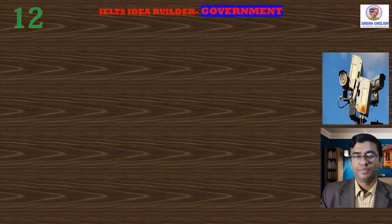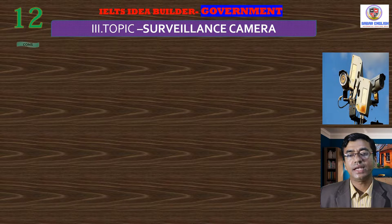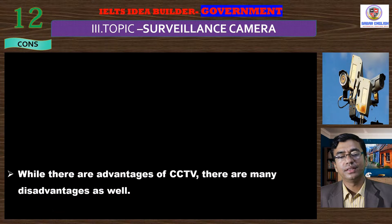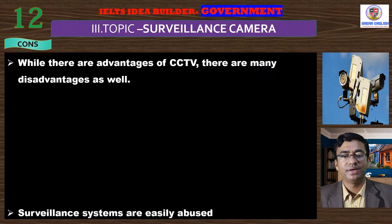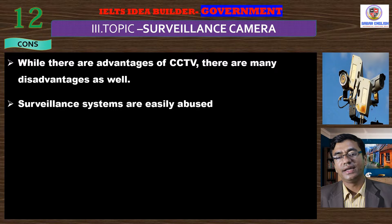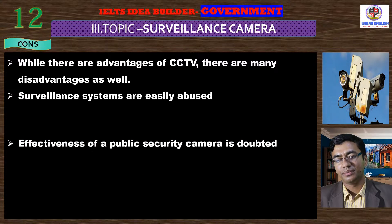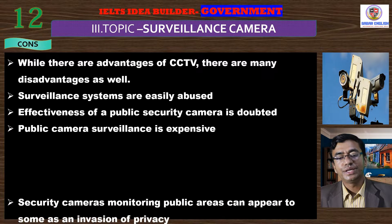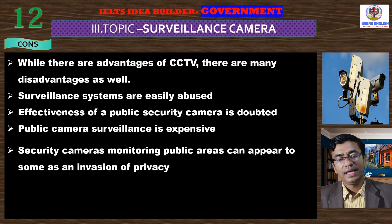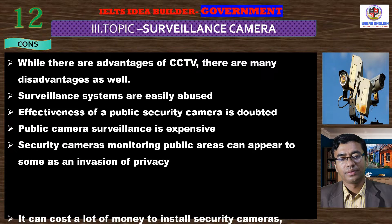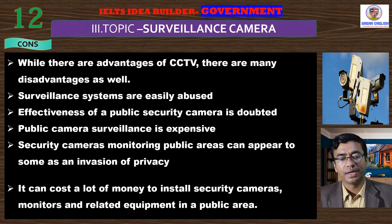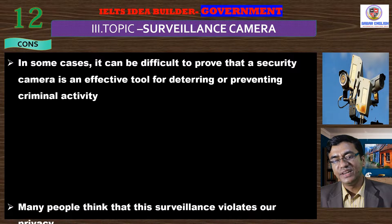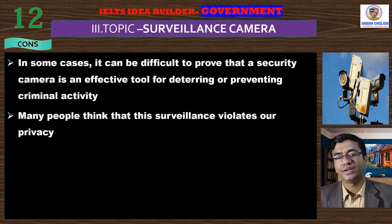It has got some negative aspects as well. Now we will discuss the negative aspects of setting up a surveillance camera in public places. At the very beginning, we can tell that while there are advantages of CCTV, there are many disadvantages as well. The surveillance systems are easily abused. Effectiveness of a public security camera is doubted. Public camera surveillance is really expensive. Security cameras monitoring public areas can appear to some as an invasion of privacy. It can cost a lot of money to install security cameras, monitors, and related equipment in public areas. In some cases, it can be difficult to prove that a security camera is an effective tool for deterring or preventing criminal activity.